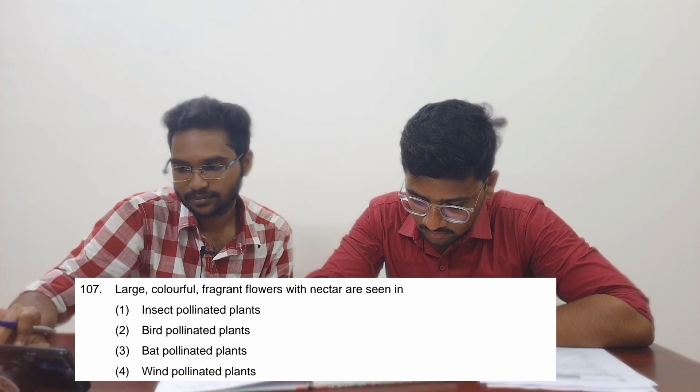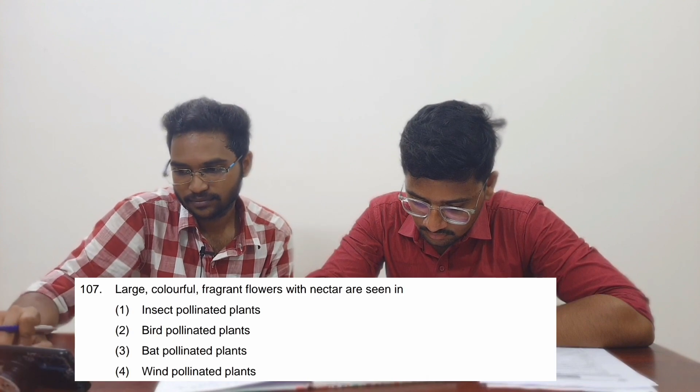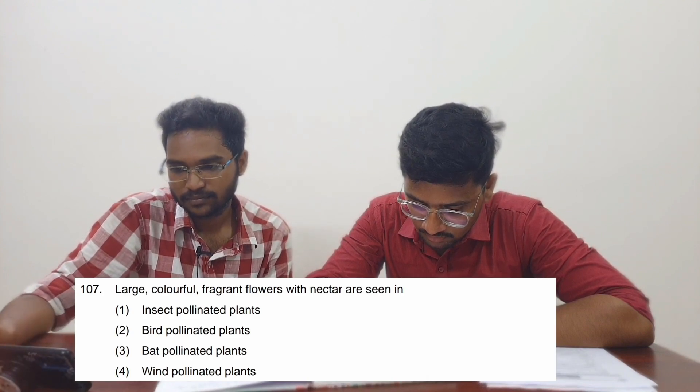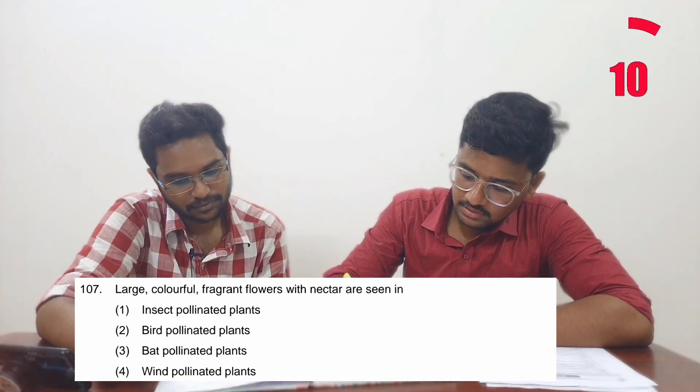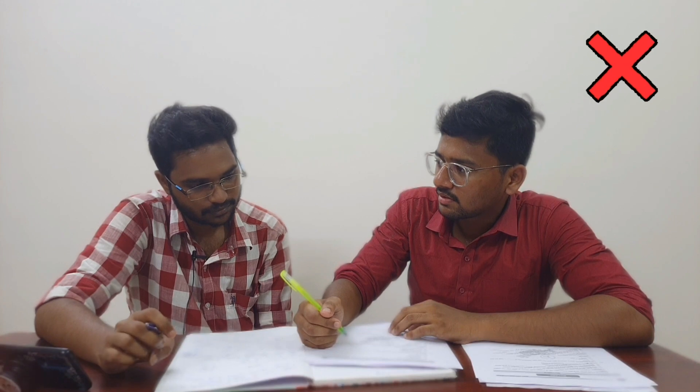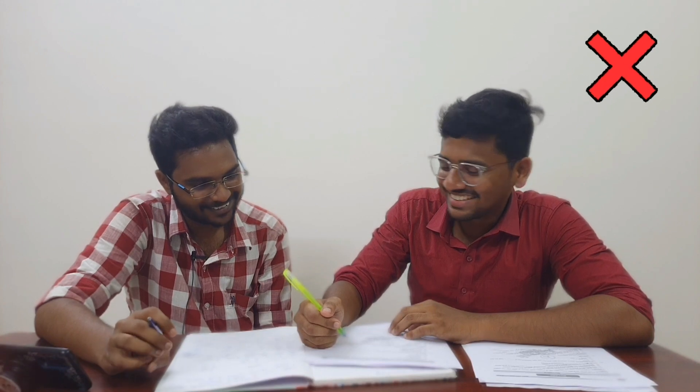That's biology. 107. Option 2, wrong. 3, wrong. 1, okay.